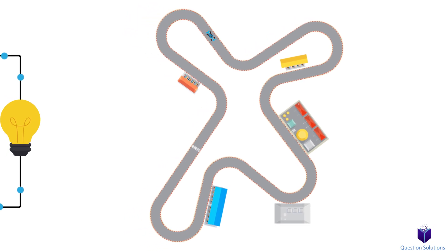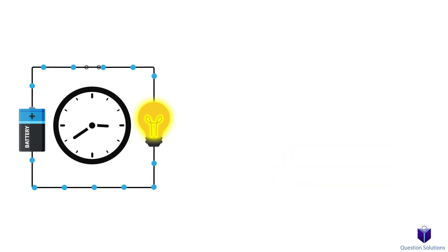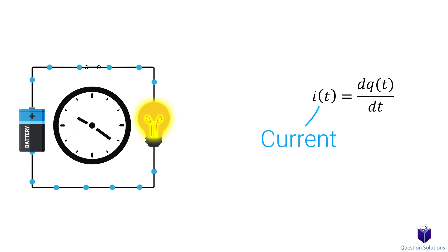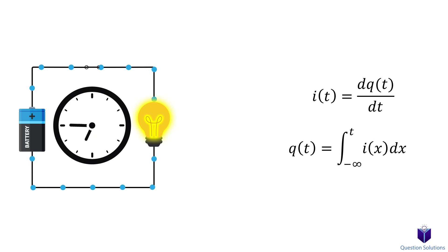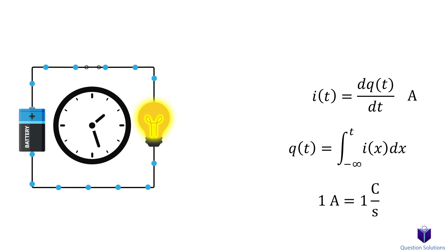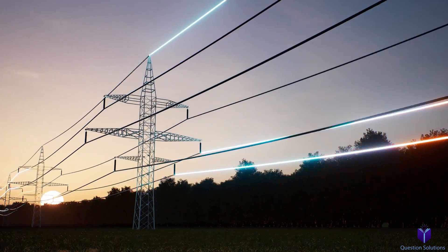If you consider the time rate of change of charge — in simple terms, how many charges move through for a certain time period — you get electric current. We can write that as i = dq/dt, where i is the current and q is the charge. Taking the derivative of charge gives us the current; to find the charge from current we take the integral. Current has the units amperes, or amps (A), and one ampere equals one coulomb per second.